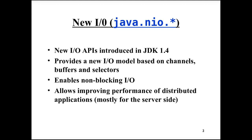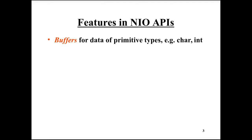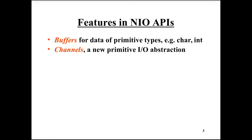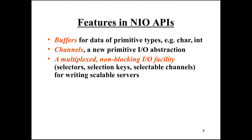The main features of the NIO API are buffers, which are data containers — there are buffers for different data types like byte, char, and int. Another feature is channels, which are connections that pass data. Then there are selectors, which enable non-blocking IO. And there are character set encoders and decoders for translating between characters and byte-based data.